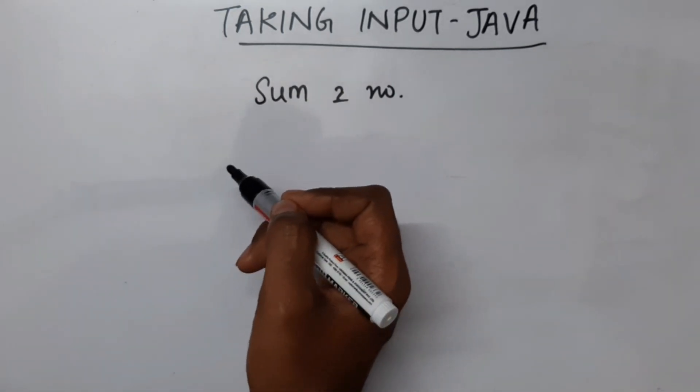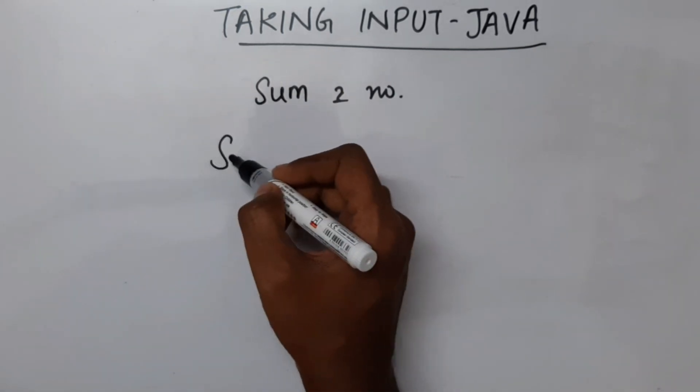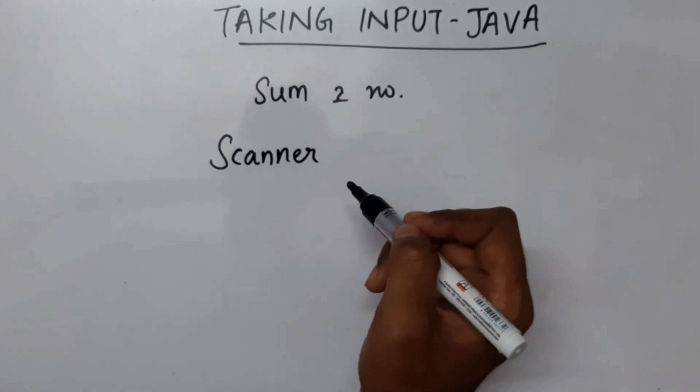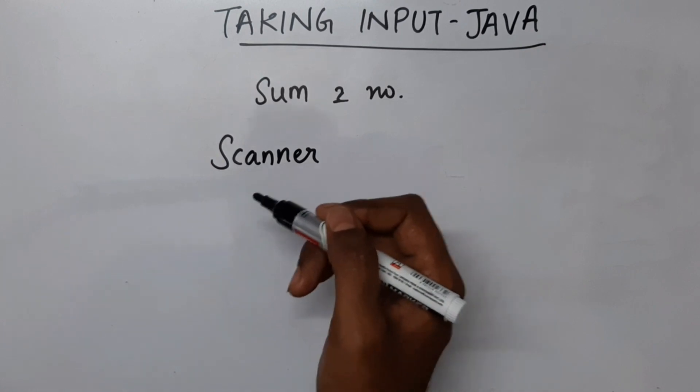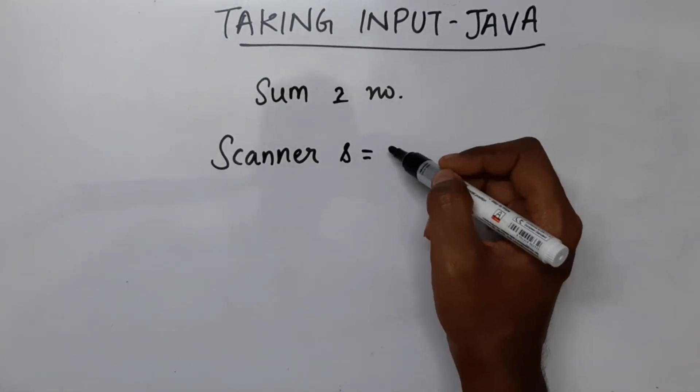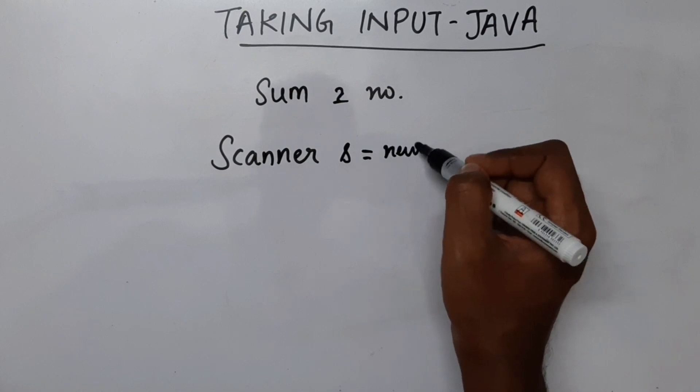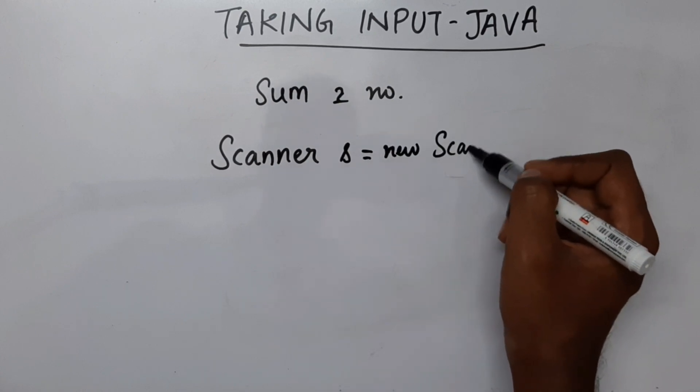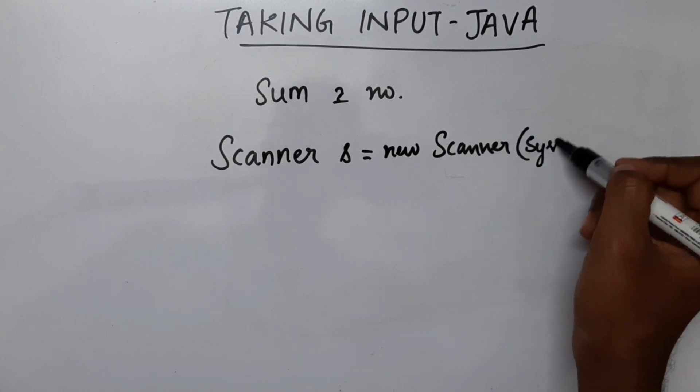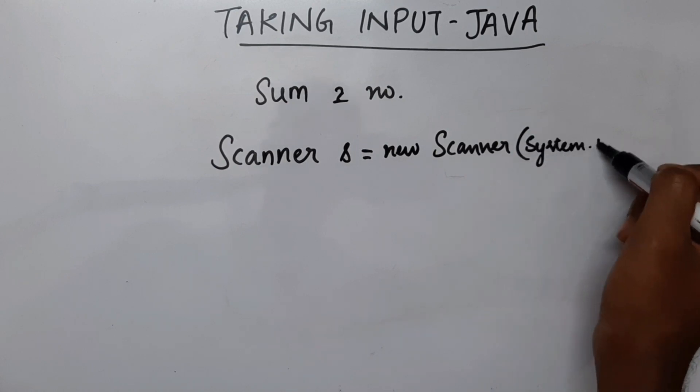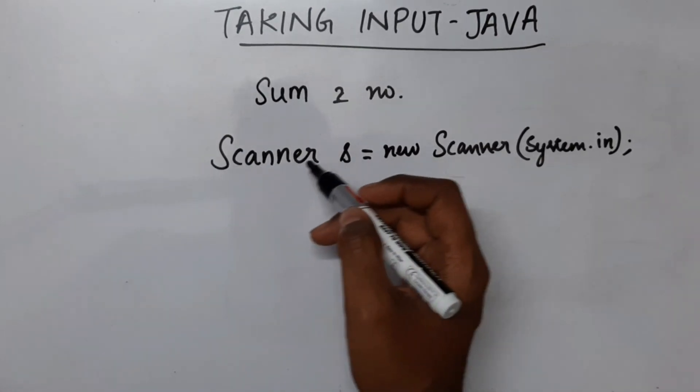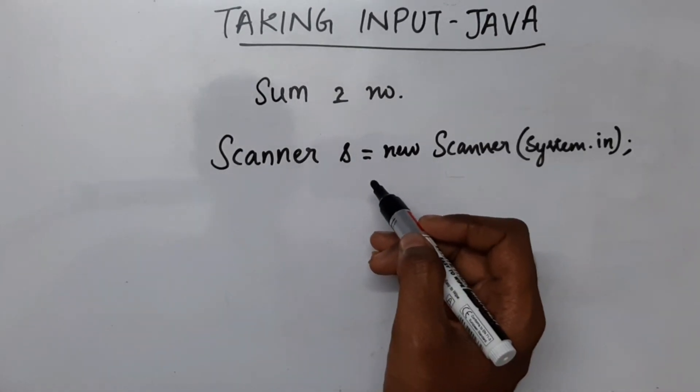So for that we are going to use a class called Scanner. We are going to create an object of this Scanner. So I will say Scanner s is the object, s equals new Scanner system.in. So this is the syntax to create object of a Scanner class to take input.